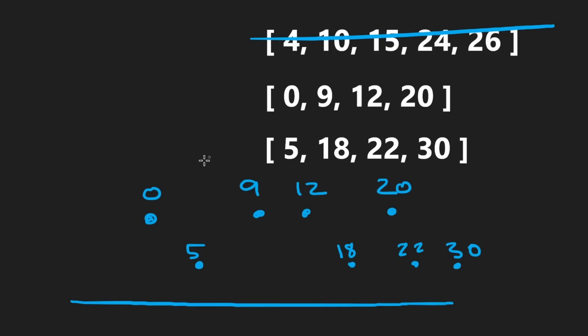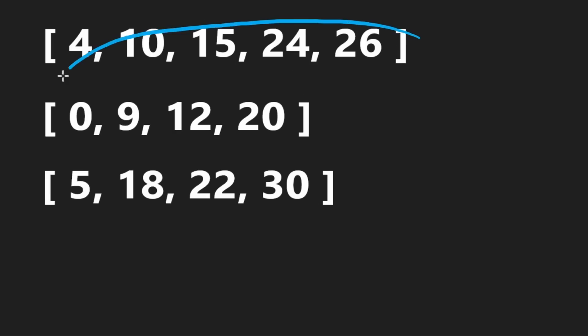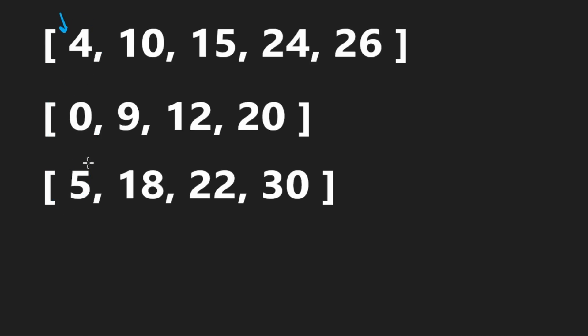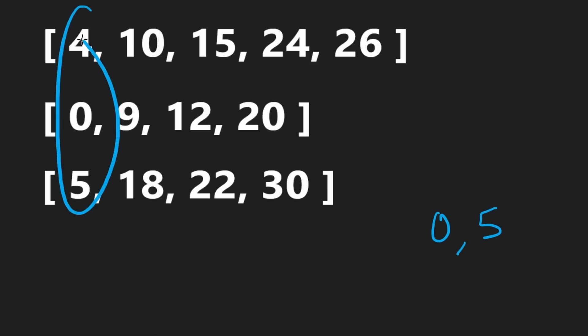Can this solution also be applied to multiple lists? Yes, it actually can. Go through all the lists and put a pointer at the first element of each. Get the minimum among all those elements and the maximum among all of them — in this example that's zero to five, which is our first range. Then pick the minimum and shift the pointer at that position.